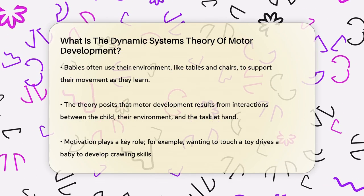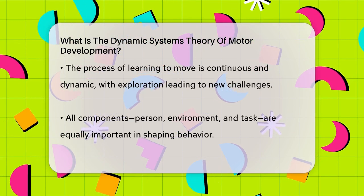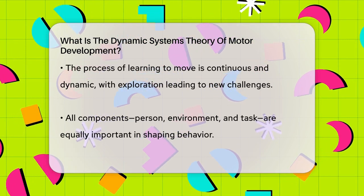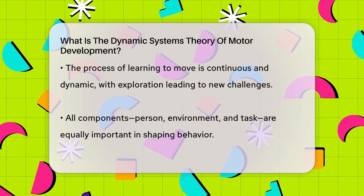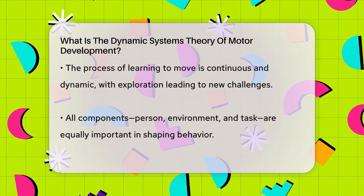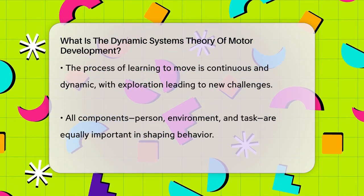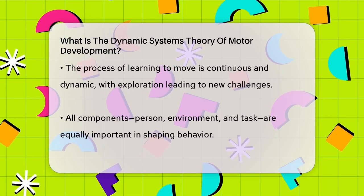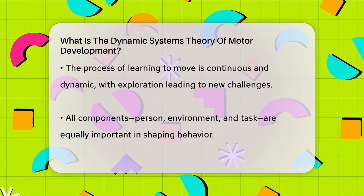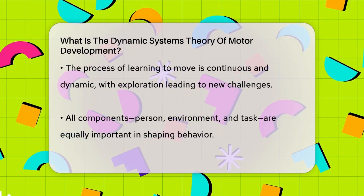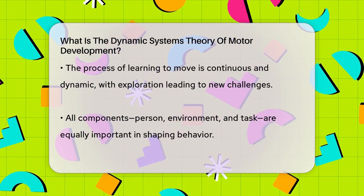This process is continuous and dynamic, with the child's exploratory activities leading to new challenges and advancements in their motor skills. The dynamic systems approach emphasizes that all components of the system — person, environment, and task — are equally important and can contribute to the emerging behavior. Changes in any of these components can lead to changes in the behavior.